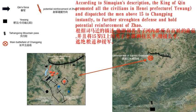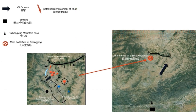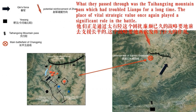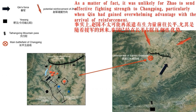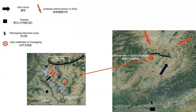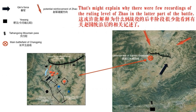According to Sima Qian's description, the king of Qin mobilized all the civilians in Henei prefecture and dispatched the men above 15 to Changping instantly, to strengthen the defense and hold off any potential reinforcement of Zhao. What they passed through was the Taihang mountain pass, which had troubled Lianpo for a long time. The place of vital strategic importance once again played a significant role in the battle. As a matter of fact, it was unlikely for Zhao to send effective fighting strength to Changping, particularly when Qin had gained an overwhelming advantage with the arrival of the reinforcements.